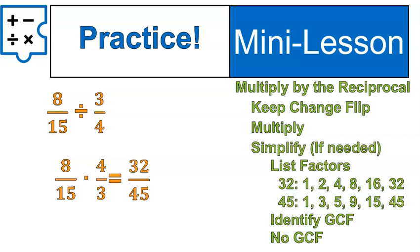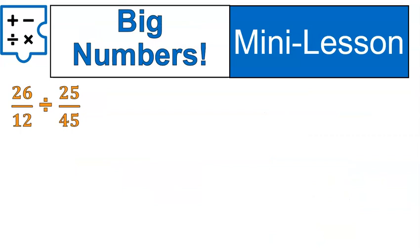15 times 3 is 45. And then we're going to simplify by listing out our factors, identifying our greatest common factor, which is none. There actually is no greatest common factor other than 1. So that means 32 out of 45 is our final answer in lowest terms. Nice.